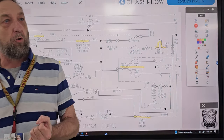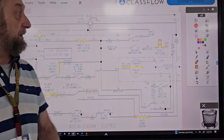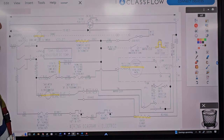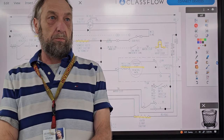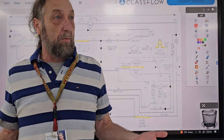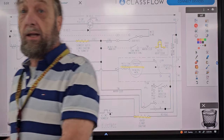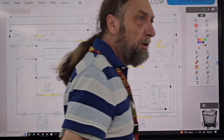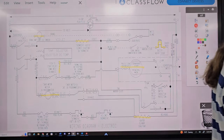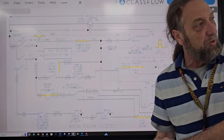First, we have to go to the appliance we're having an issue with — let's say the dryer. If a customer says it doesn't buzz anymore, that's the load. If they say it's not heating, the heating element is probably the load. If they say the dryer doesn't start, the motor is the load, and the push-to-start switch would be the control for that load.